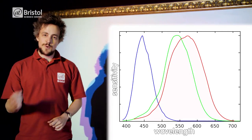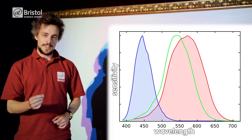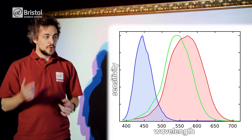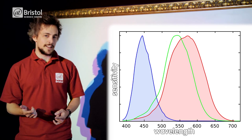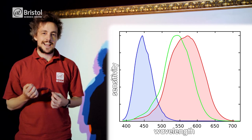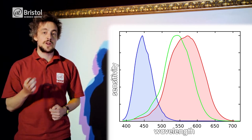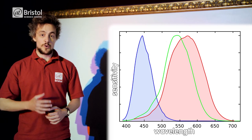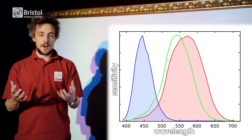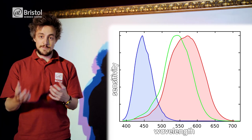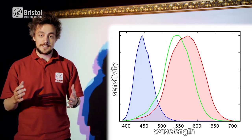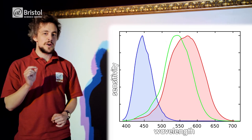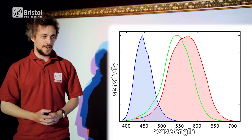When you mix red and blue light, the colour in between them is green, but your green cone cell isn't detecting any light of a green wavelength. So if your red and blue cone cells are being stimulated but there's no green light, your brain invents a new imaginary colour.